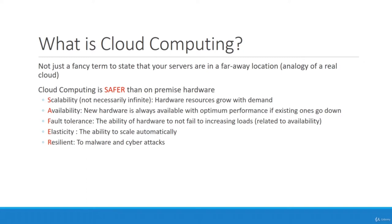The alternative to cloud computing is on-premise computing — where you have your own data centers, servers, and hardware that you own. The difference between cloud computing and on-premise hardware is basically ownership and access. Cloud computing is SAFER than on-premise hardware — that's an acronym I coined myself, not an industry standard term, aligning the letters to describe what cloud computing is all about.